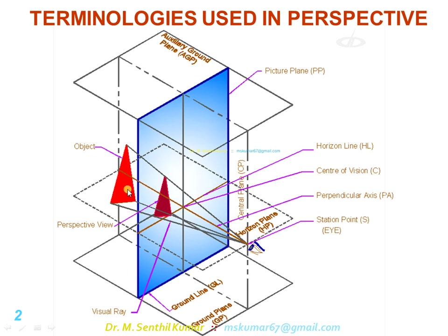So you need three data points. The object is some distance behind the PP and some distance above the GP. The other plane is the auxiliary ground plane, AGP, but it does not have much importance while solving problems. There is another horizontal plane passing through the eye point called the horizon plane, abbreviated as HP. Here, HP does not mean horizontal plane as in orthographic; it is the horizon plane. The line of intersection of PP with the horizon plane is the horizon line, HL.